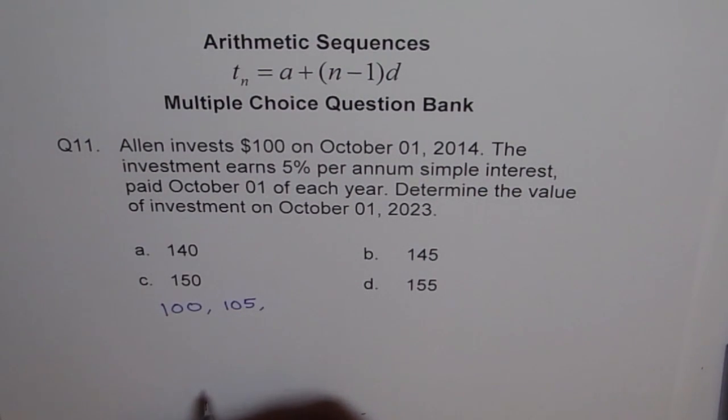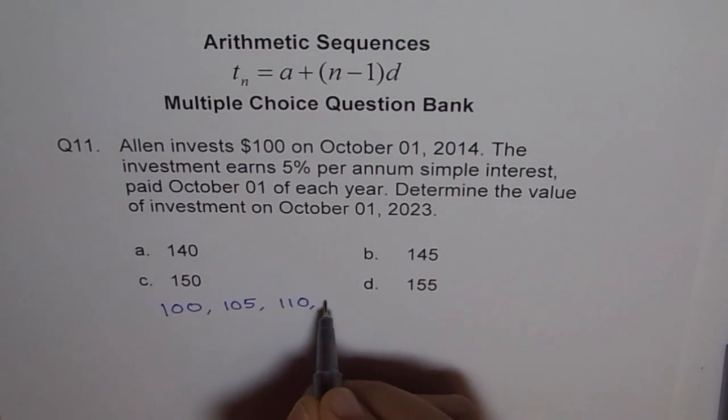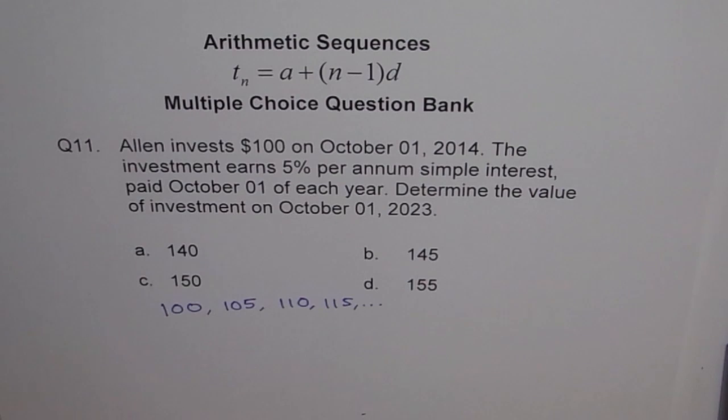So that is the second year. Then, next year, again, 5 more dollars will come. So it becomes $110. And then, again, 5 more, $115. So that is how your sequence is going to grow or the money is going to grow.